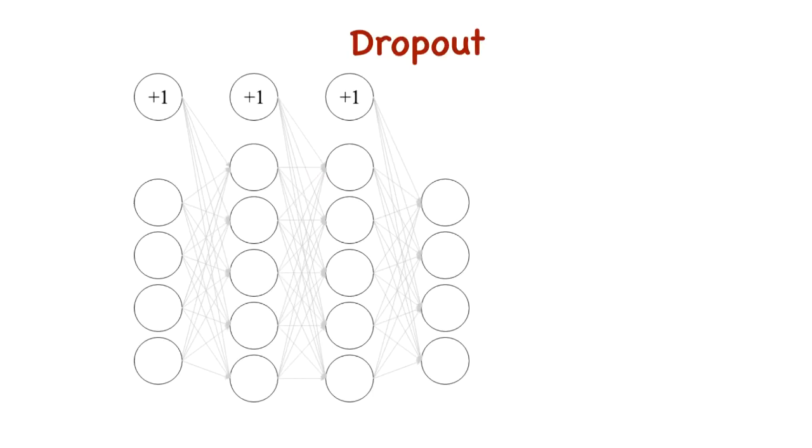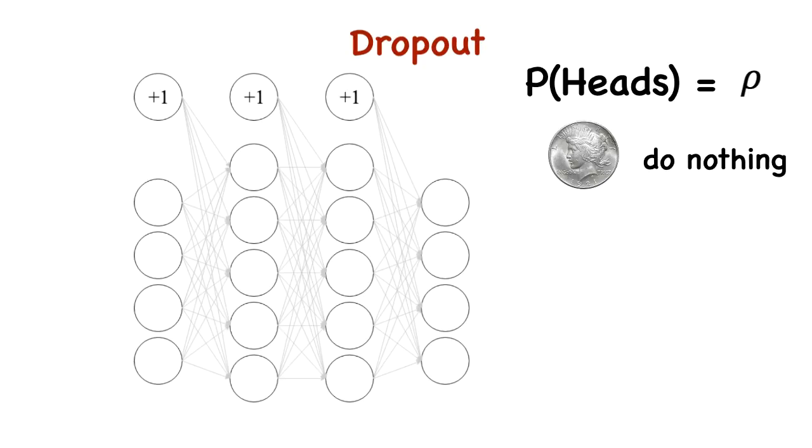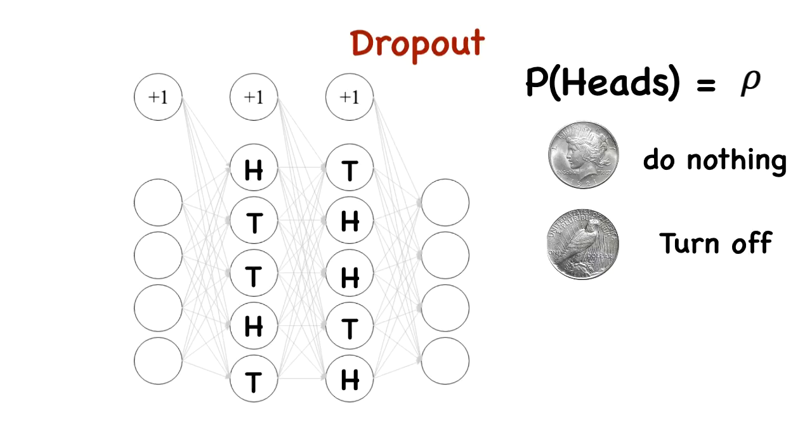Give every neuron a probability of being fired some rho. Then flip a biased coin with that probability. If heads, the neuron is left alone. If tails, we turn the neuron off. We flip a coin for every neuron while inputting a sample for training.